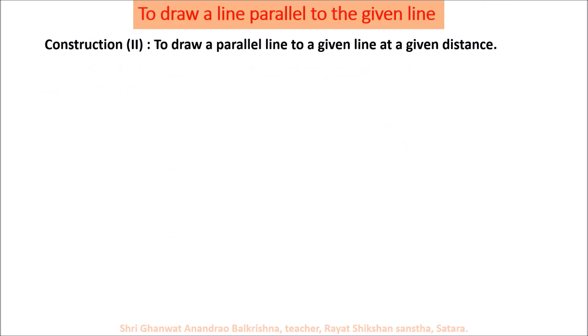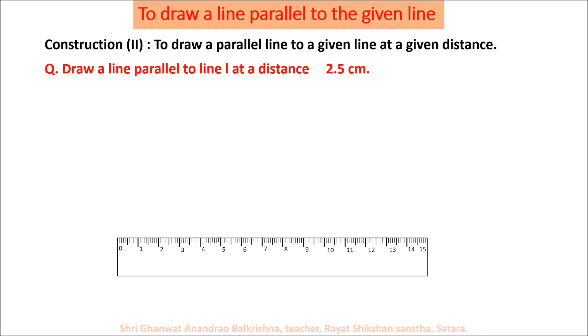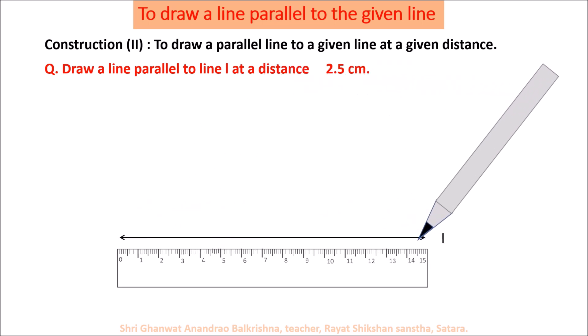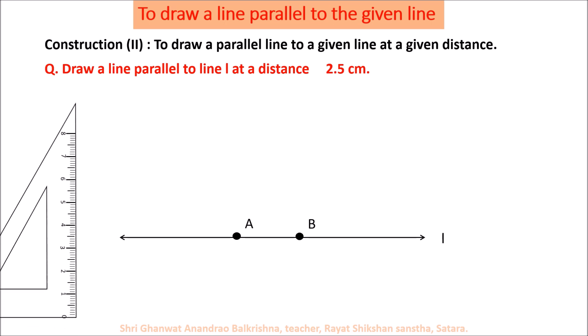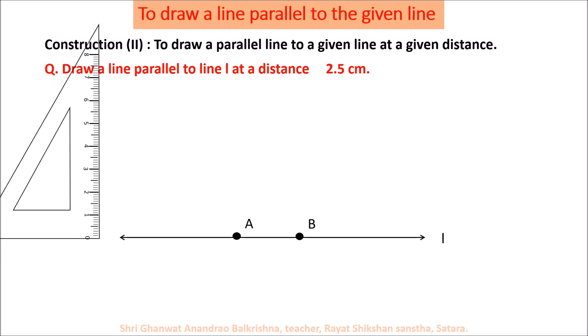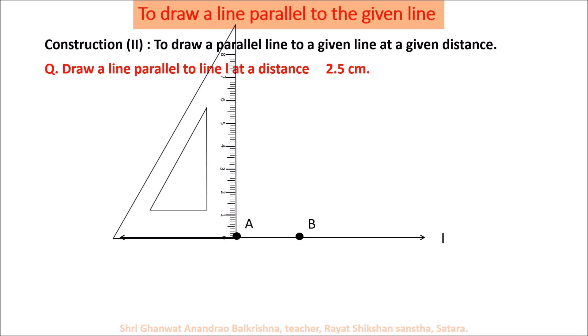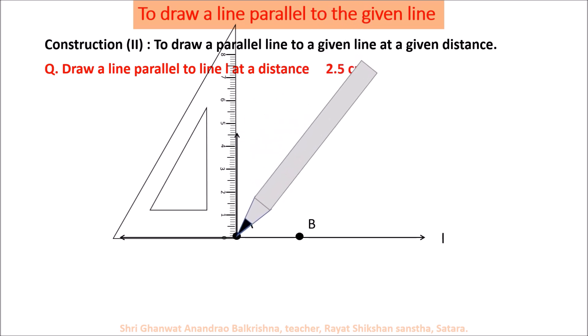Now let us consider another question: to draw a parallel line to a given line at a given distance. Draw a line parallel to given line L at a distance of 2.5 cm. Take a ruler and draw line L. On this line L, take two distinct points, point A and point B. Use a set square to draw a perpendicular at point A. Take point P on this perpendicular exactly at 2.5 cm.